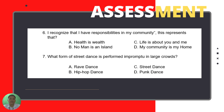Number seven: What form of street dance is performed impromptu in large crowds? Is it A — rave dance; B — hip-hop dance; C — street dance; or D — punk dance?